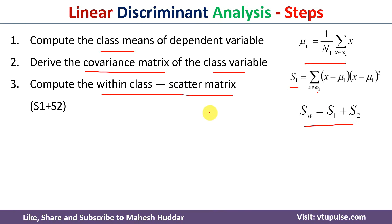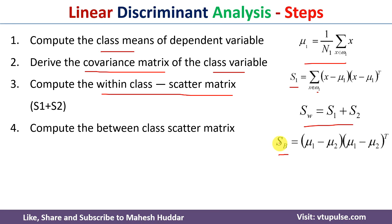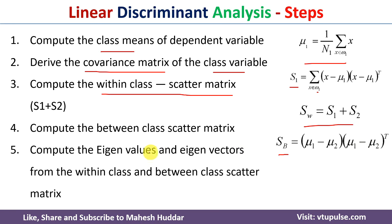Once the within-class scatter matrix is calculated, the next step is to calculate the between-class scatter matrix. SB equals (mu one minus mu two) multiplied by (mu one minus mu two) transpose, where the means are already calculated. Once you calculate this between-class scatter matrix, the next step is to calculate the eigenvalues and eigenvectors using the within-class scatter matrix and the between-class scatter matrix.